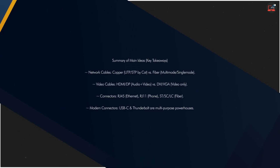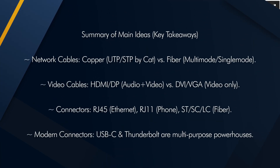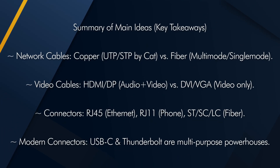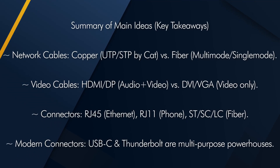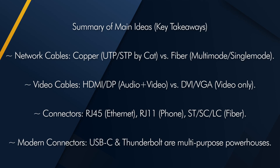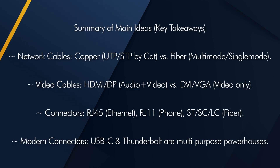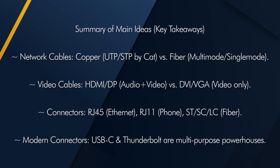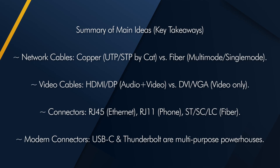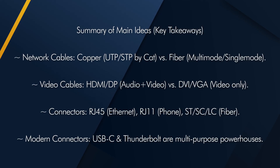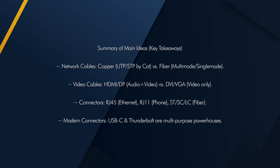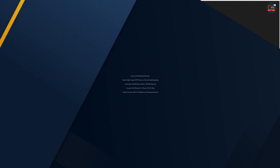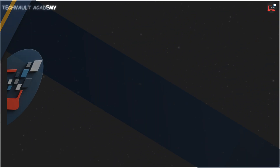For your A+ exam, here are the main ideas. Know your network cables: copper UTP and STP by category, versus fiber multimode and single-mode. Identify your video cables: HDMI and DisplayPort carry audio and video, while DVI and VGA are video only. Recognize your connectors: RJ45 for Ethernet, RJ11 for phone and DSL, and the key fiber types ST and LC. And understand that modern connectors like USB-C and Thunderbolt are multi-purpose powerhouses.